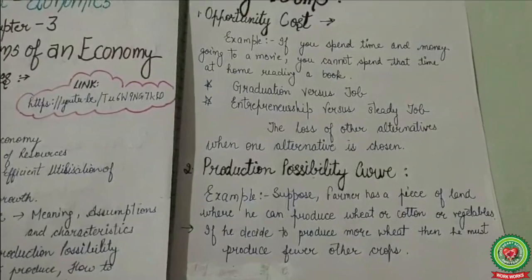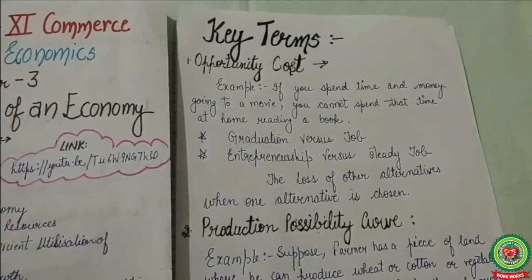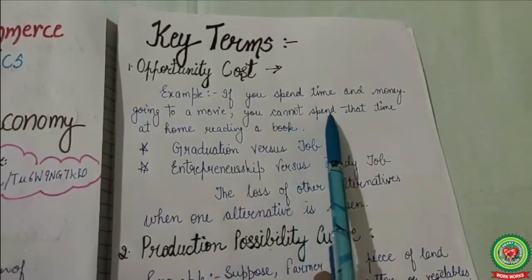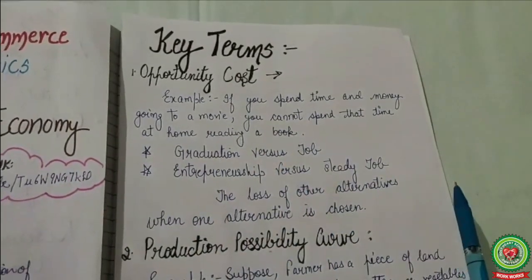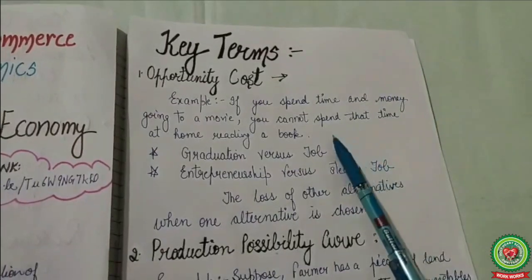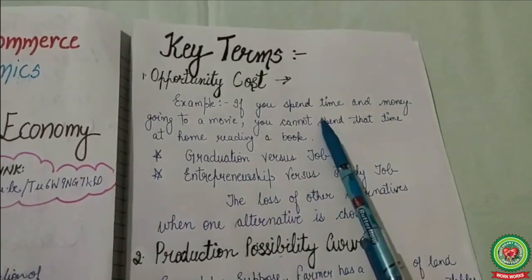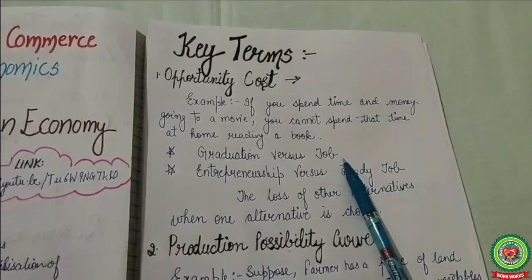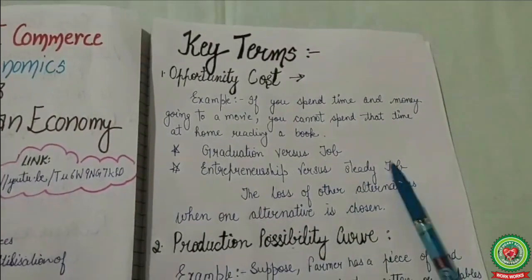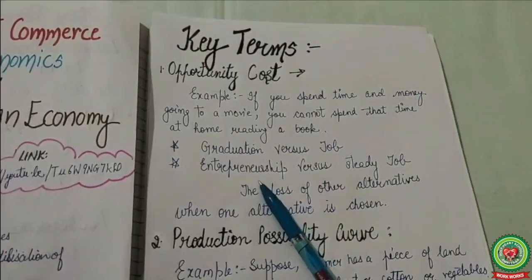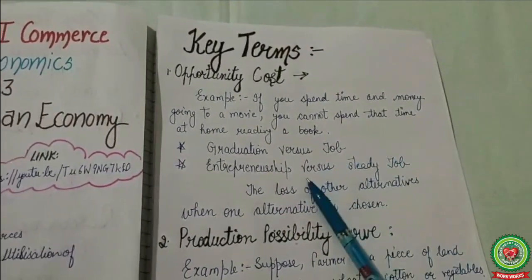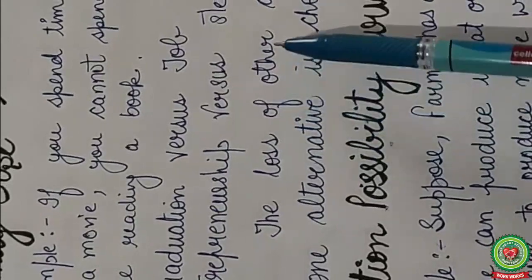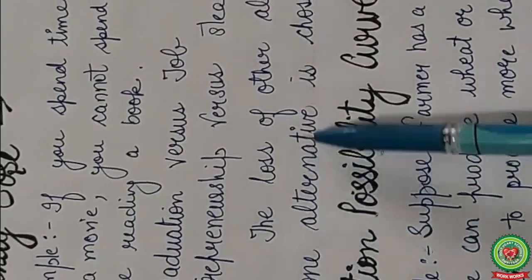First, we will discuss a key term: opportunity cost. For example, if you spend time and money going to a movie, you cannot spend that time at home reading a book or studying. This is opportunity cost — if we are getting something, we are definitely losing some other thing. For example, graduation versus job, or entrepreneurship versus a steady job. Opportunity cost means the loss of other alternatives when one alternative is chosen.